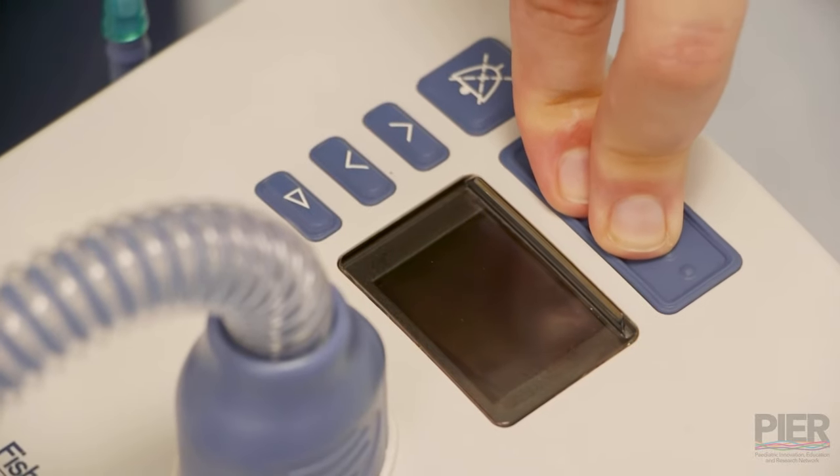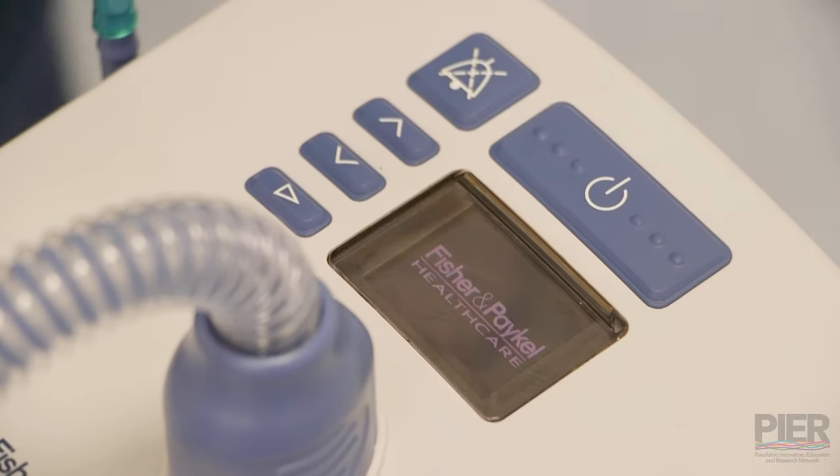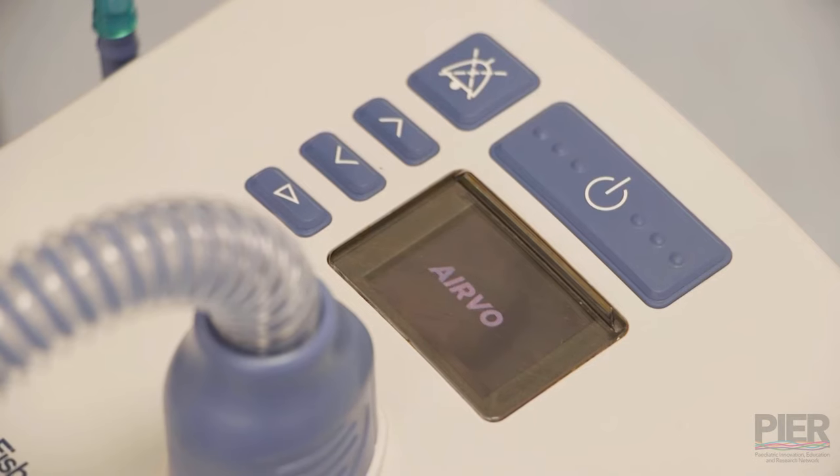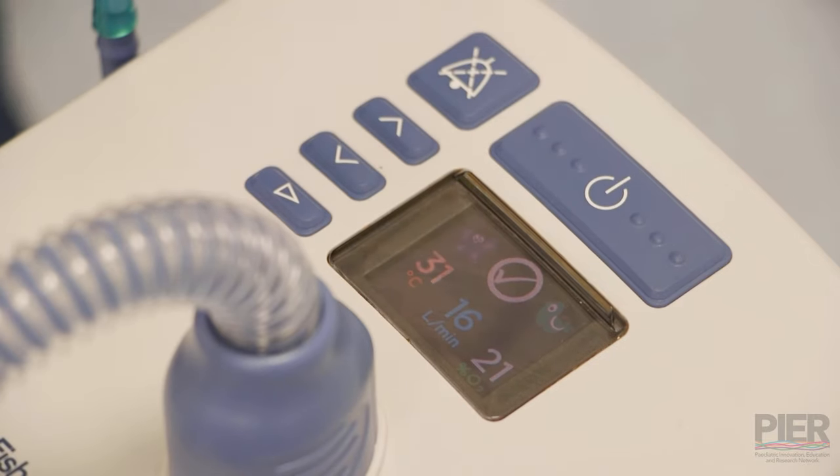So once you've connected up everything, we're going to push and power up the button to turn that machine on. It's going to run through a set of self checks and come through to a traffic light. What you want to make sure is that the traffic light is green. That means the machine has been cleaned between patients and is ready for use. So once that noise has gone and you've got a tick, then you're ready to set the machine for what you want for your patient.